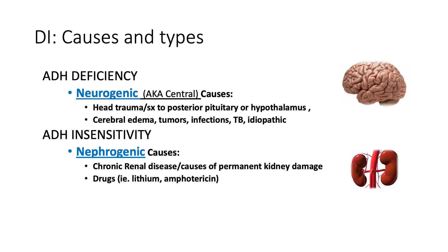If the brain is fine and we're making plenty of ADH, our kidneys may not be responding. If the distal renal tubule is not responding to ADH, that means we have diabetes insipidus related to ADH insensitivity — we call this nephrogenic, meaning it's the kidneys' problem, not the brain's. Nephrogenic DI might occur in patients with kidney disease or with specific drugs such as lithium or amphotericin, both of which can be nephrotoxic.